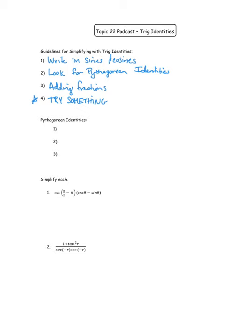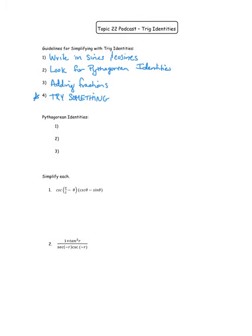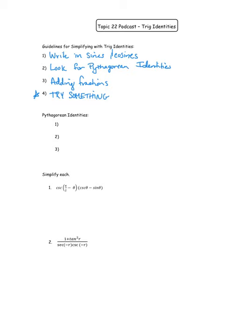Now let's review the big ones: the Pythagorean identities. Those are the most important ones to know. The first one is sin²θ + cos²θ = 1. Most people know that one — it's the most obvious — but the other two can also be very useful. To be honest, I only memorize that first one and figure out the others whenever I need them. I usually write them down right away when I get a test.